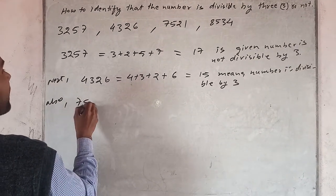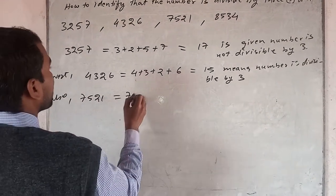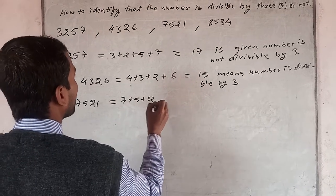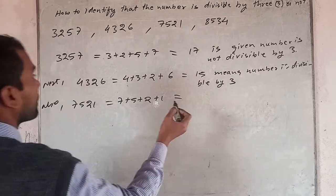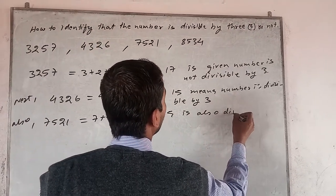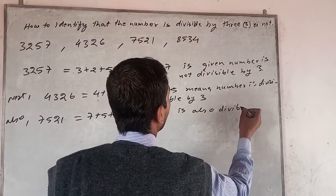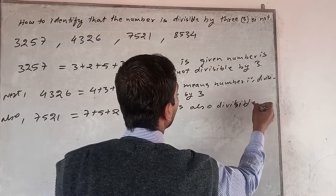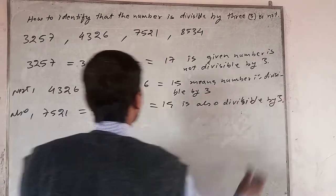Also, 7521. That's 7 plus 5 plus 2 plus 1, which equals 15. This is also divisible by 3.